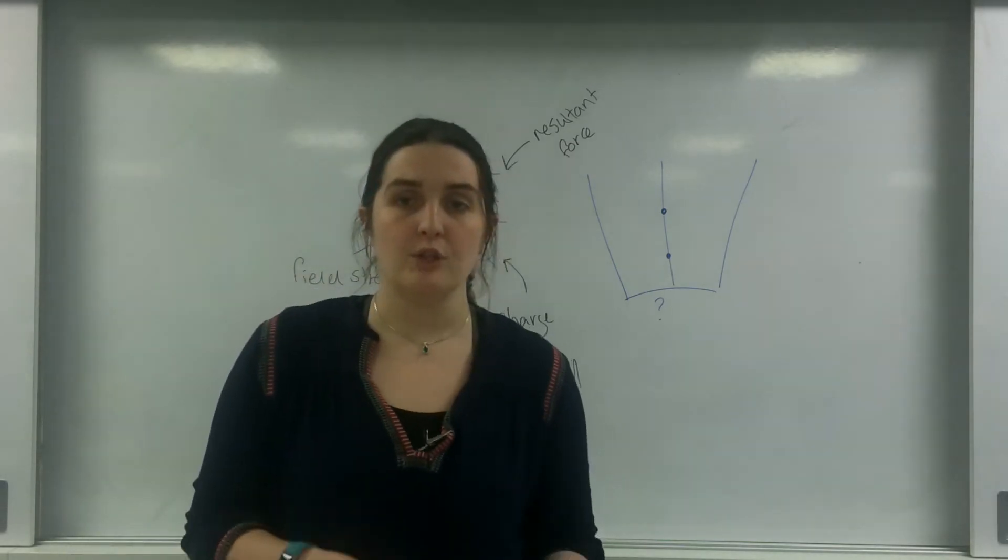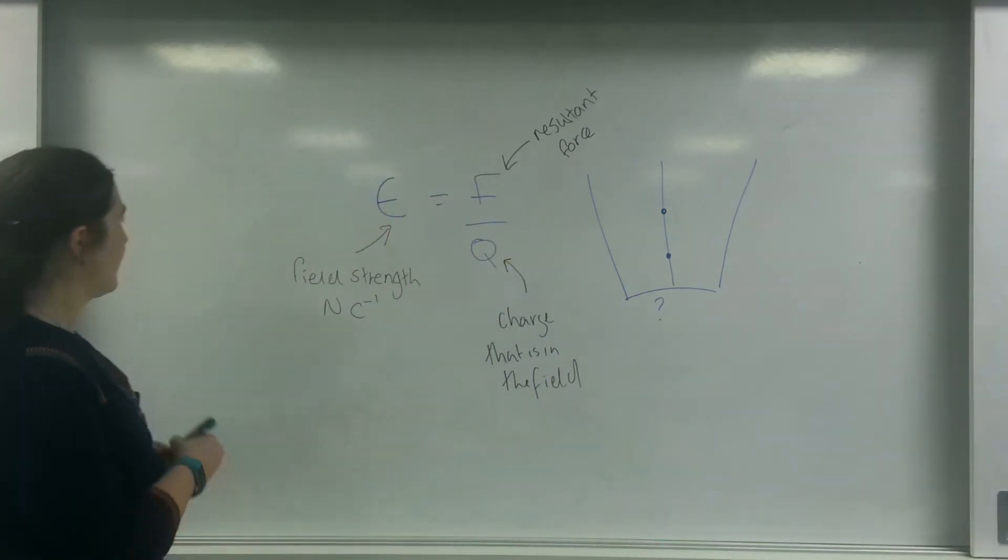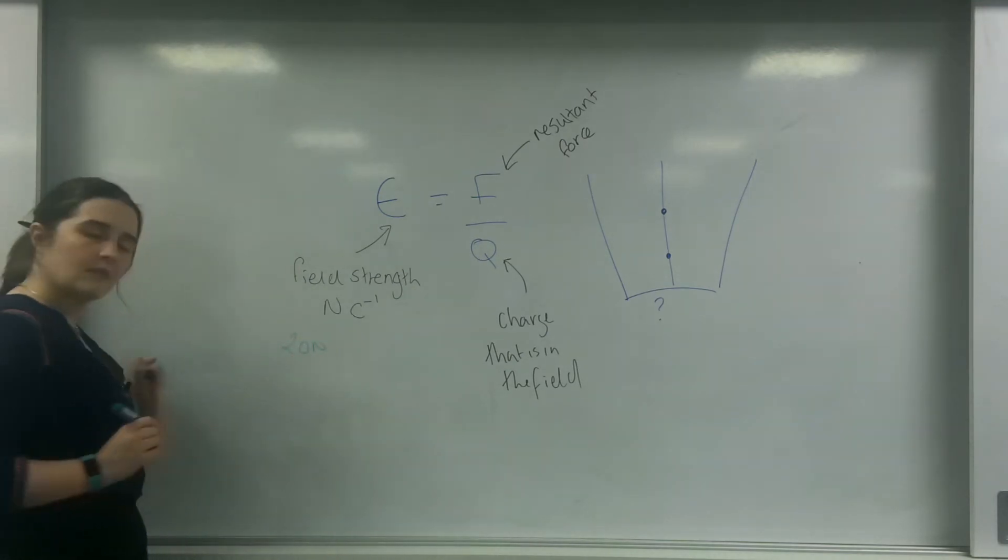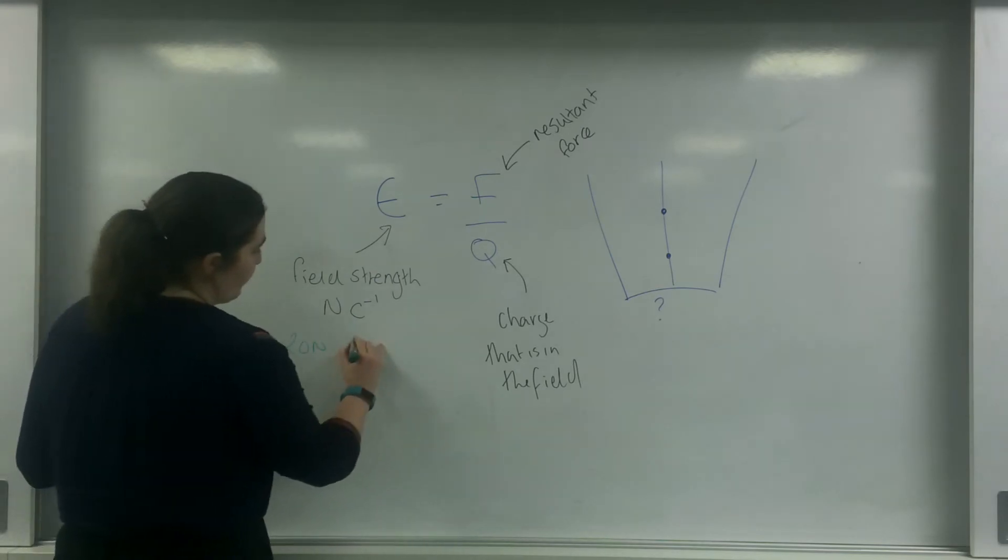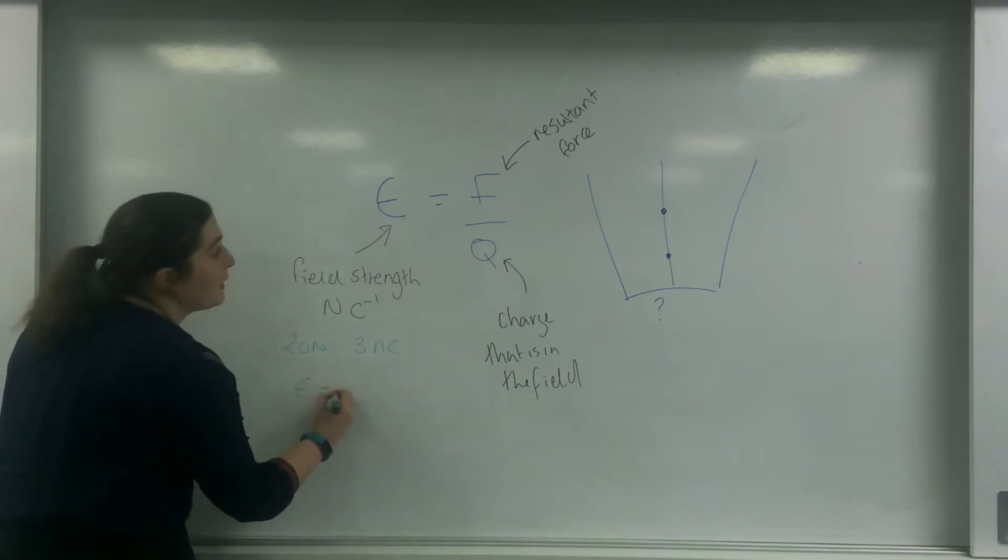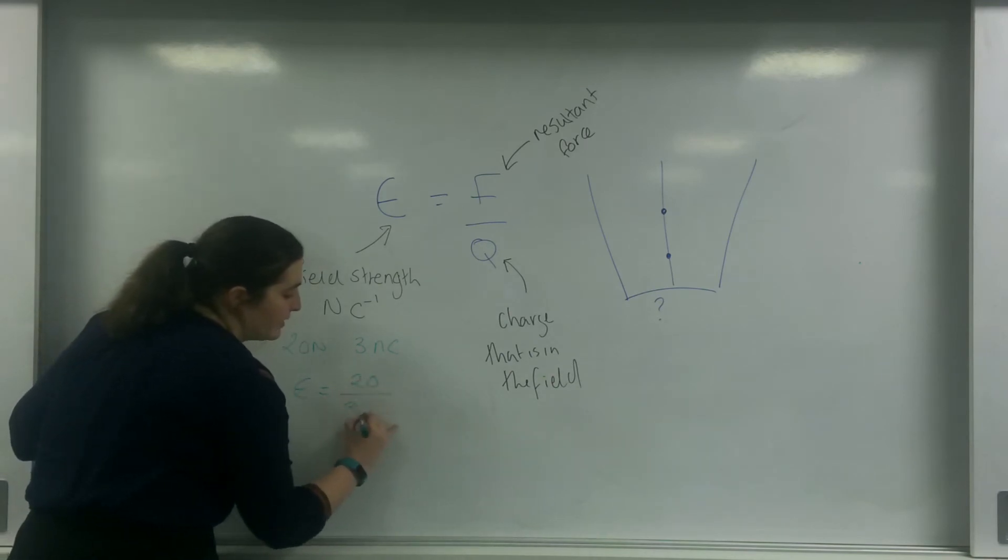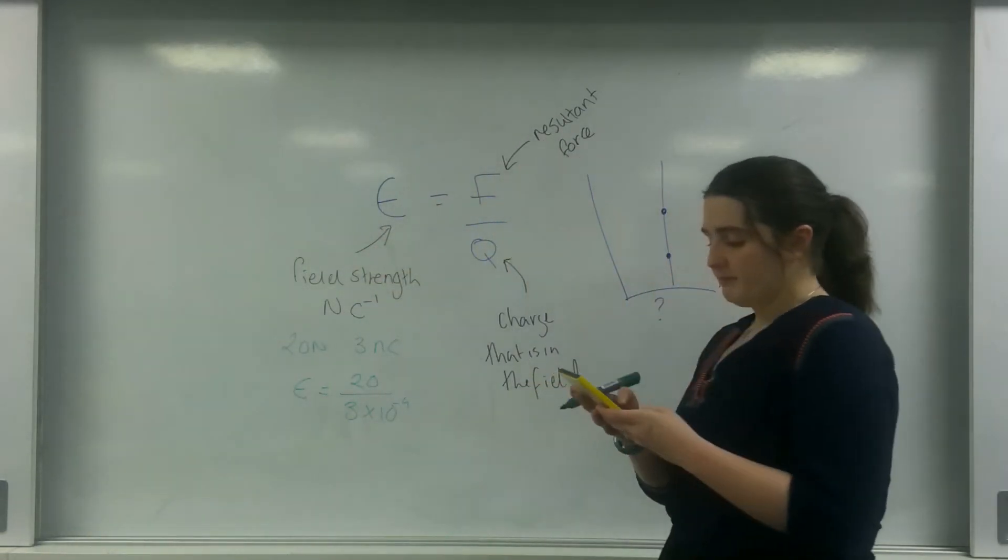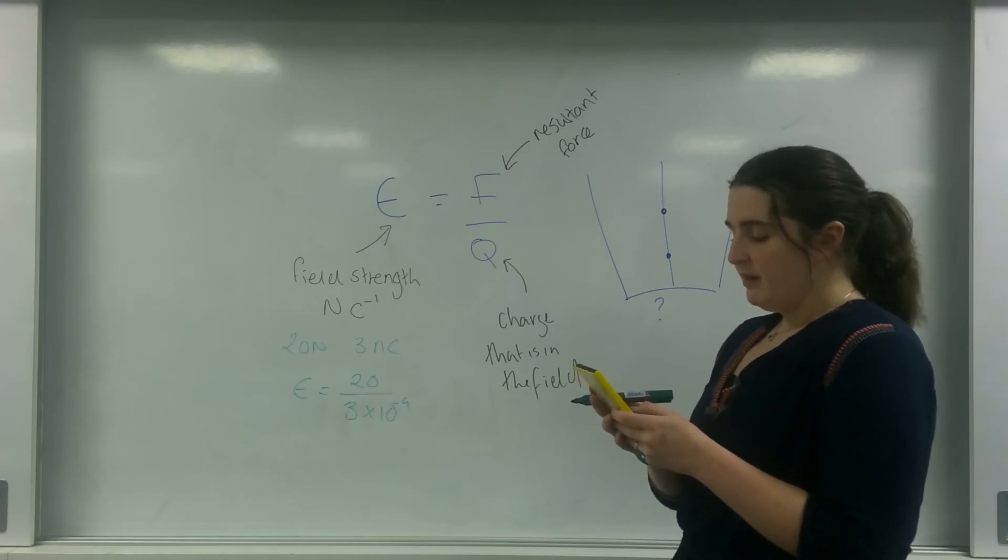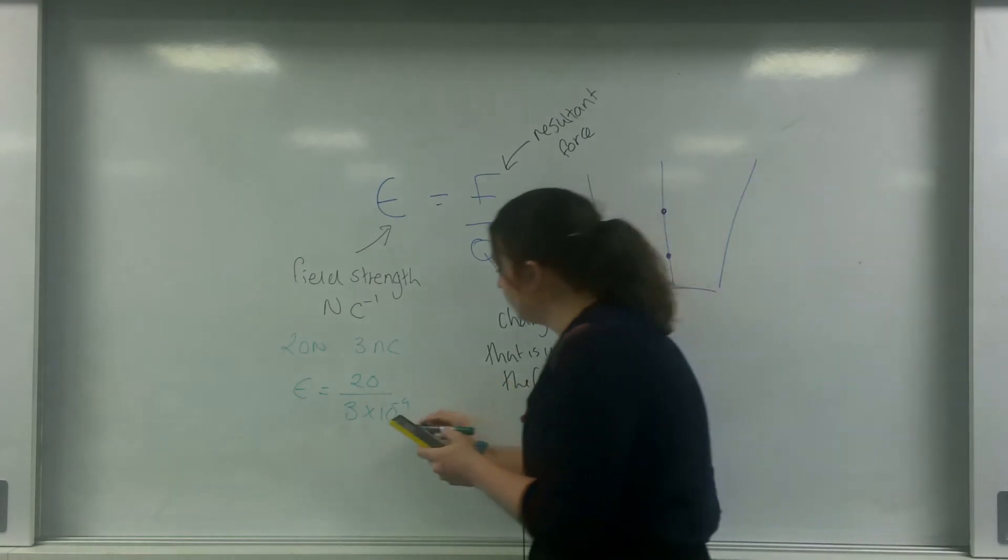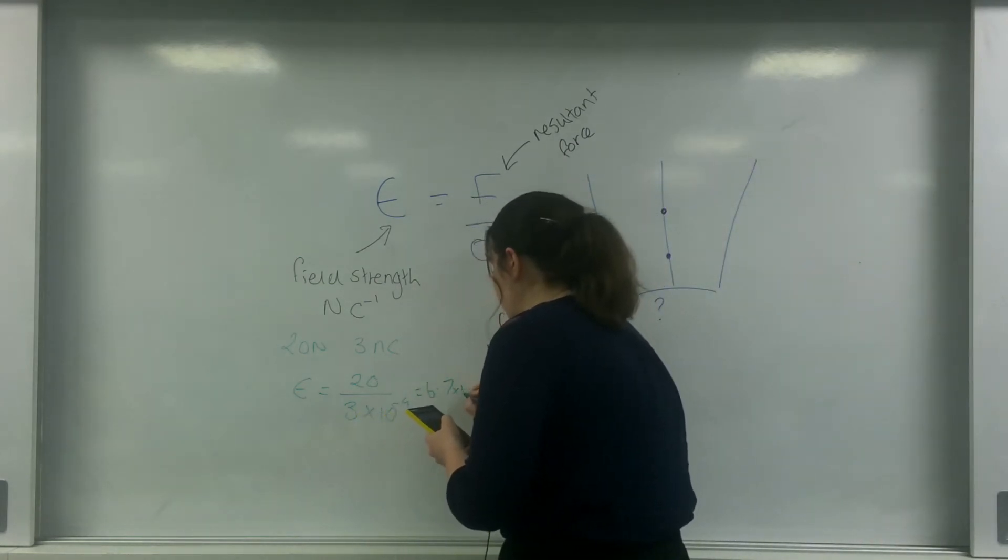Just to give you a quick example of using this formula. So let's say my object feels 20 newtons, and it's a charge of 3 nanocoulombs. My field strength would be 20 divided by 3 times 10 to the minus 9. Sorry about that.